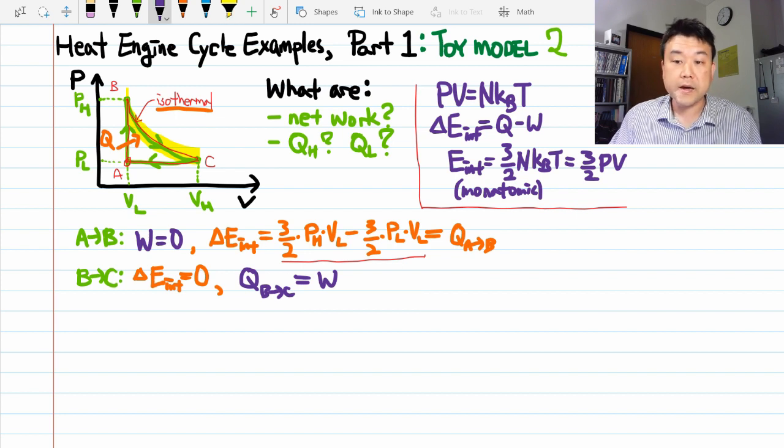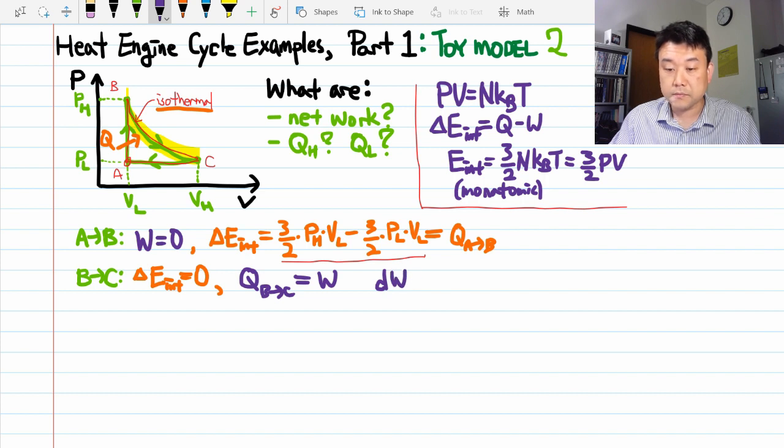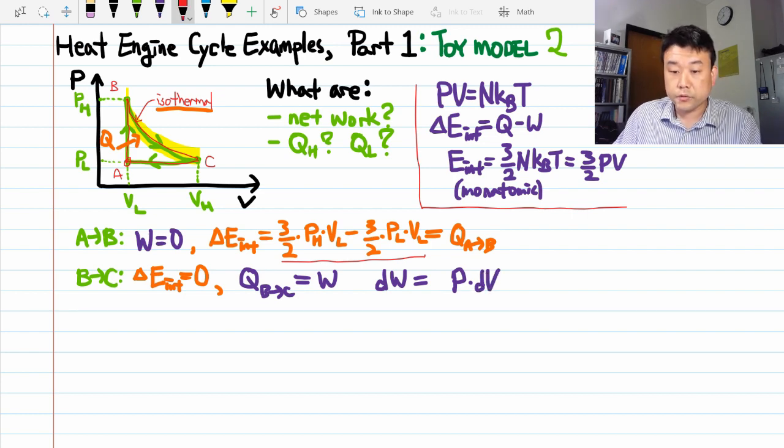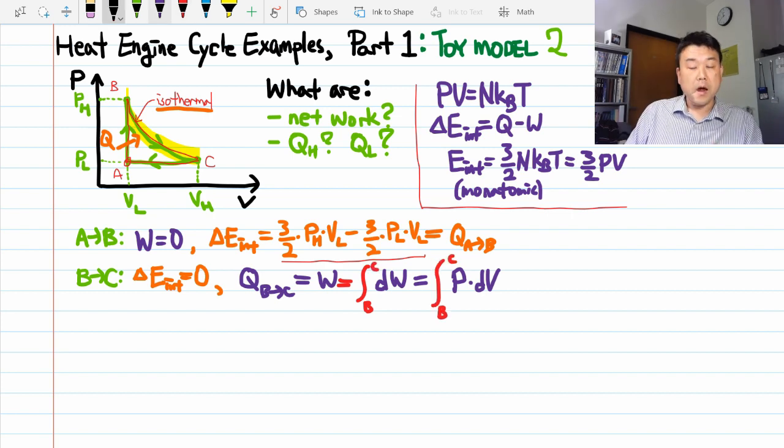Instead, we need to say that the infinitesimal amount of work done is equal to pressure times the infinitesimal change in volume. And in order to calculate the total amount of work done, we need to integrate from point B to C.